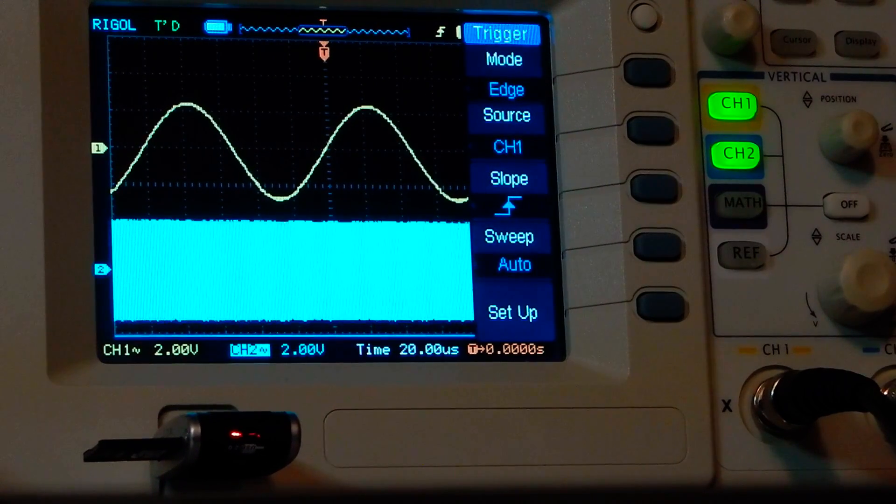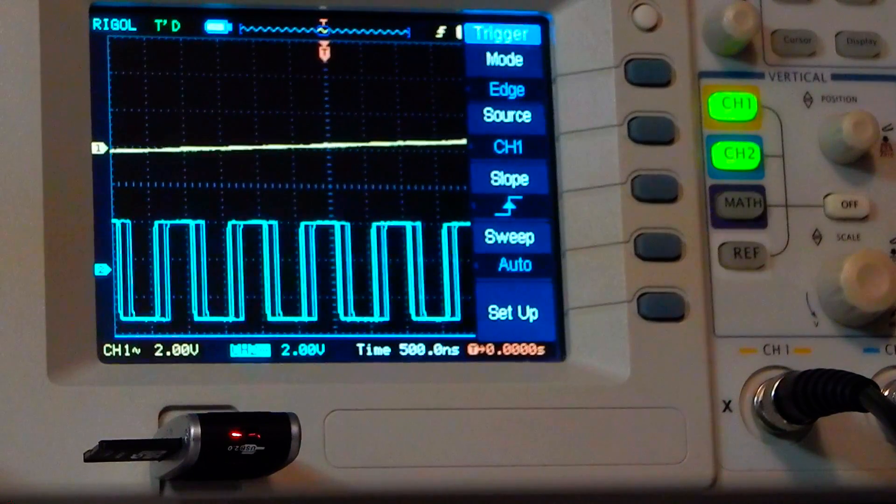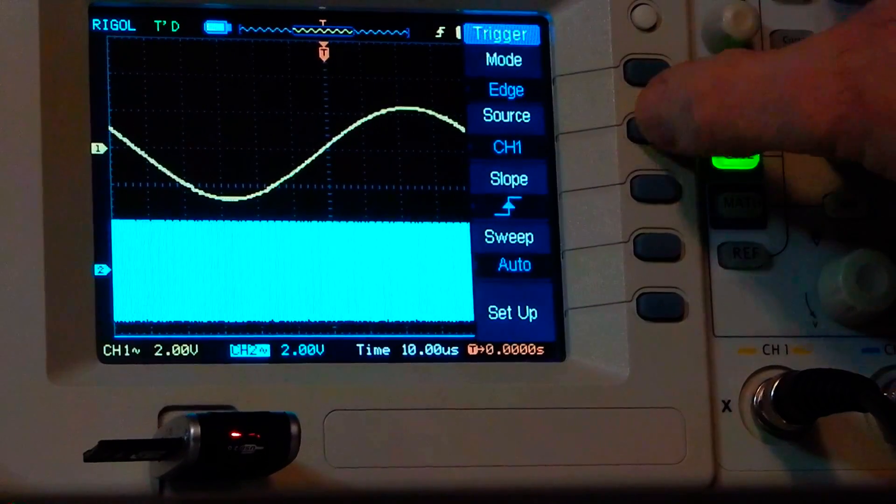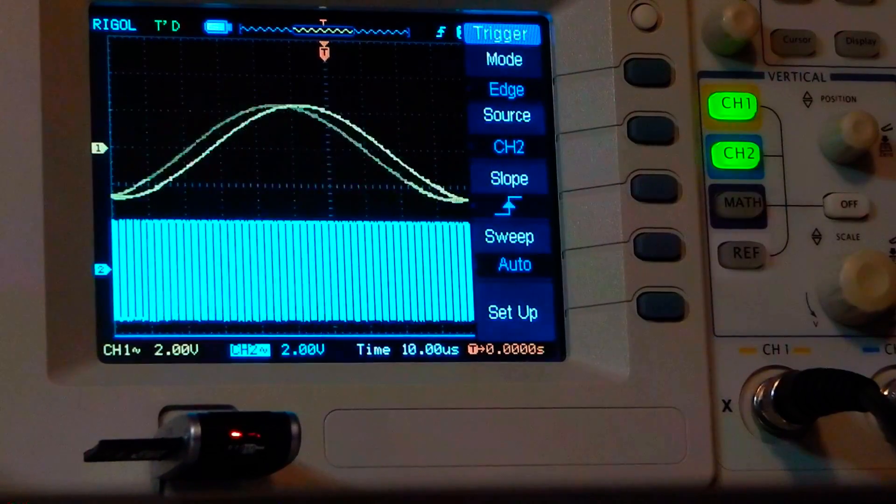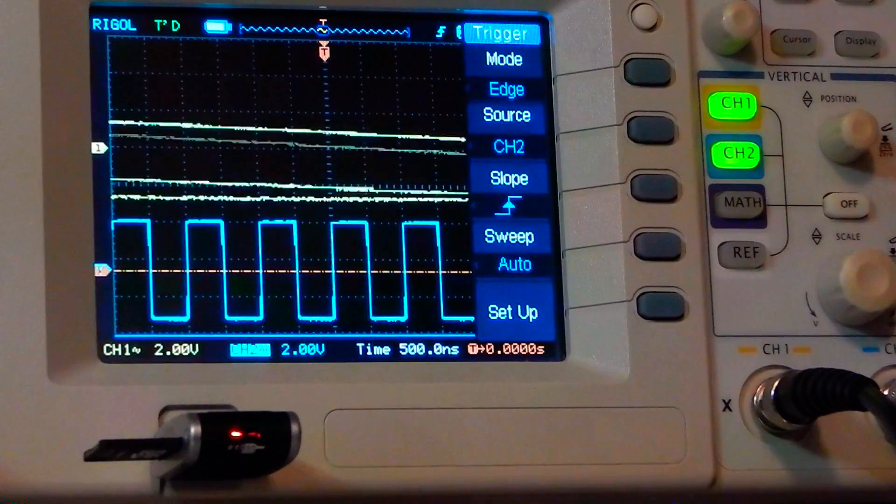If you move the time base out it's kind of jittering around, it's not really triggered on that one. But if you change the source of the trigger to channel two, the top one channel one is no longer in sync, but you can sync channel two and stabilize that waveform.